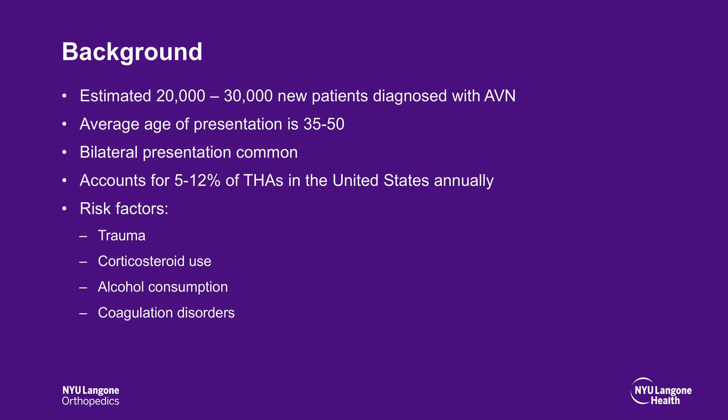It is estimated that 20,000 to 30,000 new patients are diagnosed with avascular necrosis of the hip each year. Patients who present with avascular necrosis are often younger adults, and bilateral presentation is common at 80% of the time. Furthermore, it accounts for 5–12% of total hip arthroplasties annually in the United States. Although total hip arthroplasty has been successfully used to treat hip AVN, hip preservation has been shown to improve outcomes and quality of life while maintaining the native hip joint.